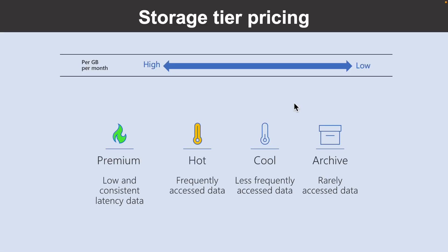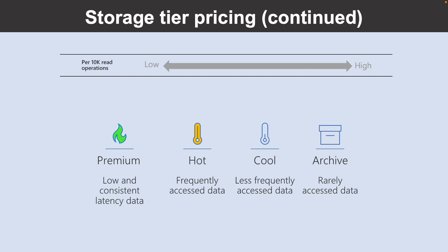Let's look into the storage tier pricing. The premium performance tier — block blobs only — and the hot access tier have the highest cost per GB per month for data. The cool and archive access tiers have better price rates for large quantities of data. The premium performance tier and the hot access tier have the lowest cost per 10,000 read operations because they are designed for highly transactional data. The cool and archive tiers are priced to optimize for storage rather than transactions, and have higher cost for large transactional workloads.